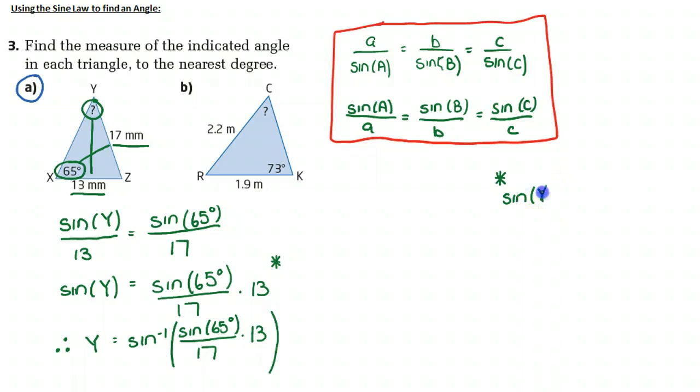Sine of Y is equal to, and then they might have evaluated the right-hand side. So if I take a second now and evaluate this, I'm going to say sine of 65 divided by 17 times 13, and I'm going to get 0.69306.